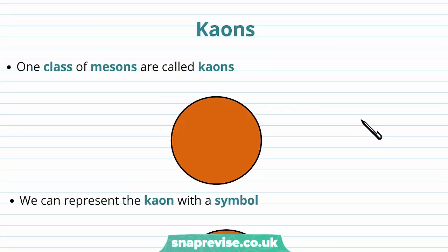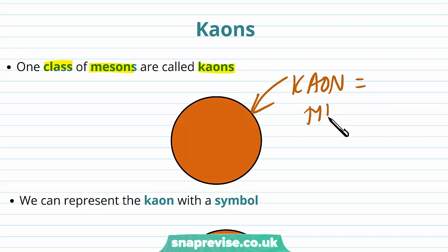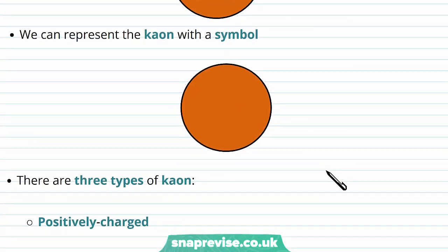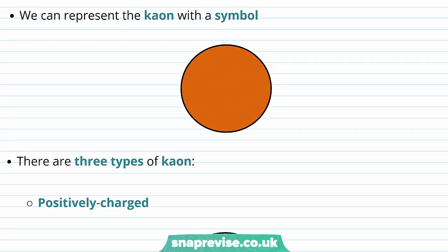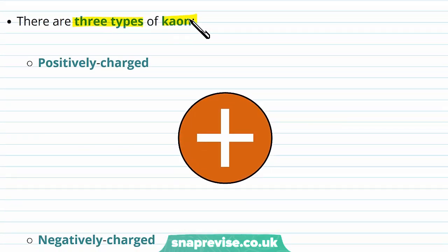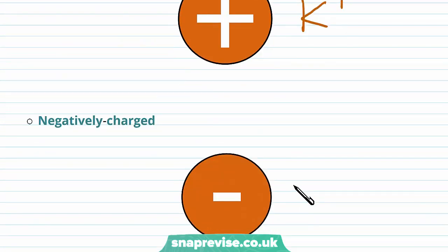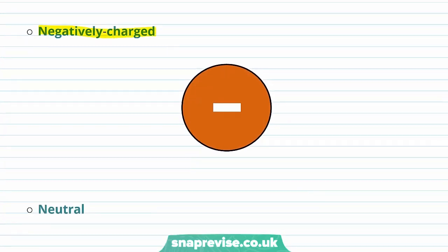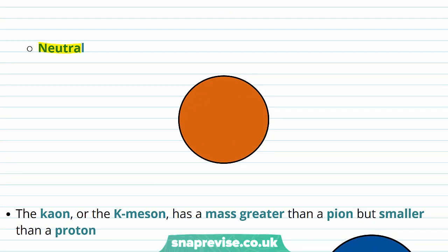Finally, we're going to look at the other type of meson: the kaon. One class of mesons are called kaons, represented by the symbol K. There are three types: a positively charged kaon K+, a negatively charged kaon K−, and a neutral kaon K0.